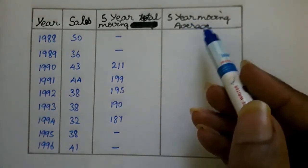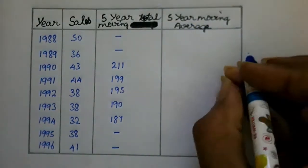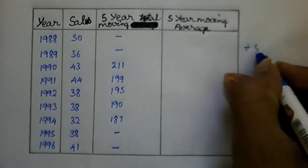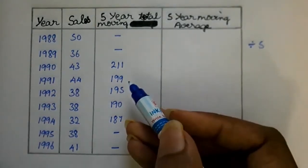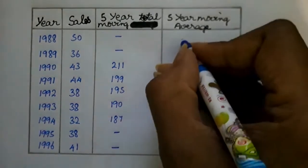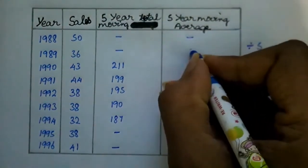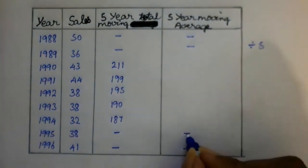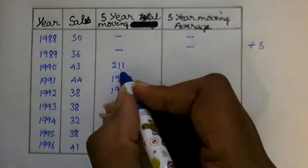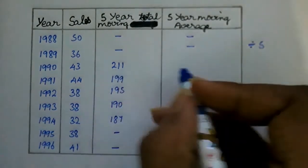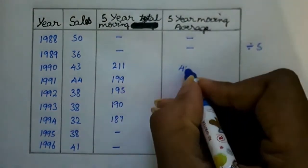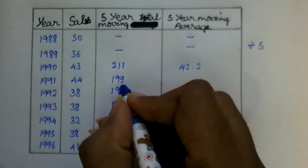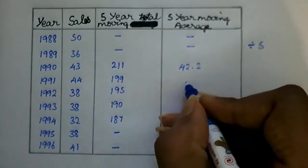For the 5-year moving average, we divide each total by 5. The first two columns are left blank. Then 211 divided by 5 gives 42.2, and 199 divided by 5 gives 39.8.